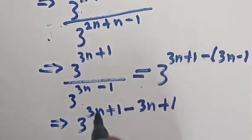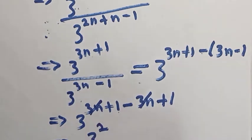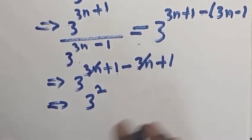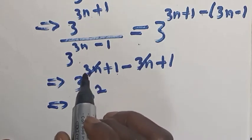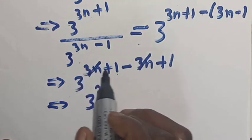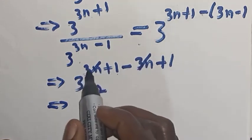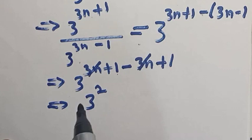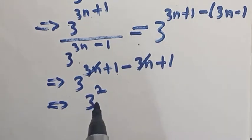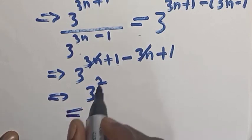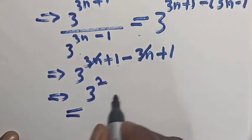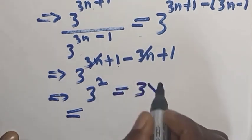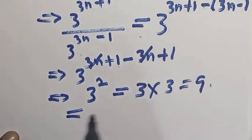So we have 3n plus 1 minus 3n plus 1. The plus 3n and minus 3n cancel each other, leaving 1 plus 1, which equals 2. So we are left with 3 raised to power 2. Our final answer is 3 raised to power 2, which is the same as 3 times 3, which is equal to 9.